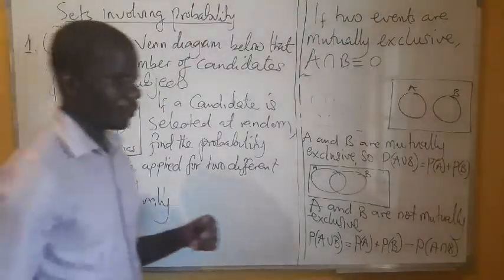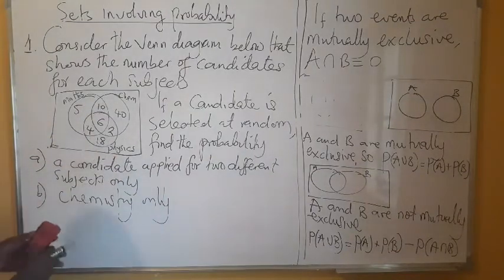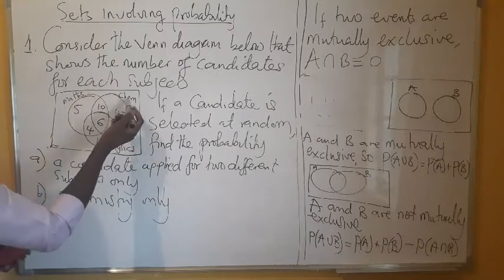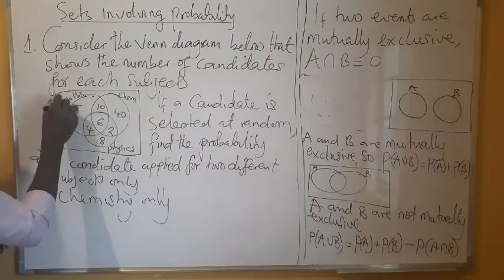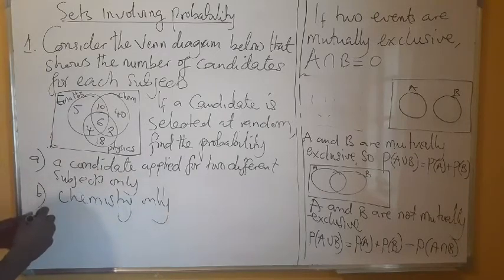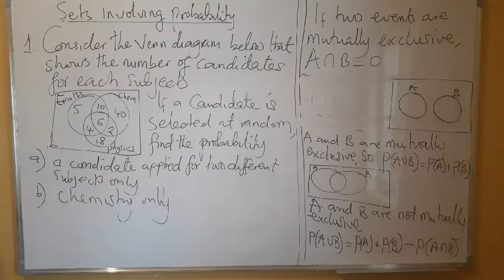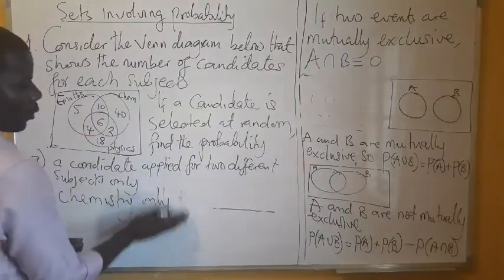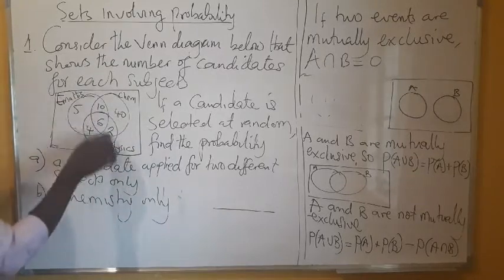I just want to explain to you how you can handle a question that has probability. So we have a Venn diagram here that shows the candidates that study mathematics, chemistry, and physics. Now we are saying from this universal set, if a candidate is selected at random, find the probability that a candidate applied for two subjects only. The only thing we are supposed to do here when looking at probability is first find the total number of students or candidates. So this is 20...